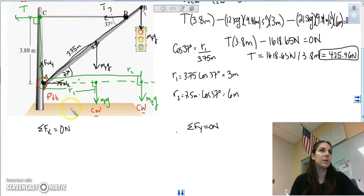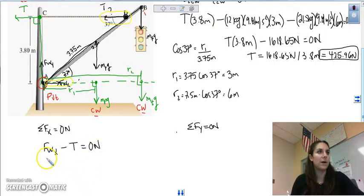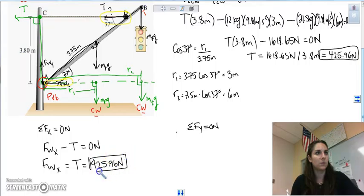If you take a look at the forces in the x, the only forces we have is the Fx right here and the tension. Notice how they're completely horizontal. So F wall of x minus tension equals zero newtons. We've solved that. The wall in the x direction is equal to the tension, which we already have. That's the x component.